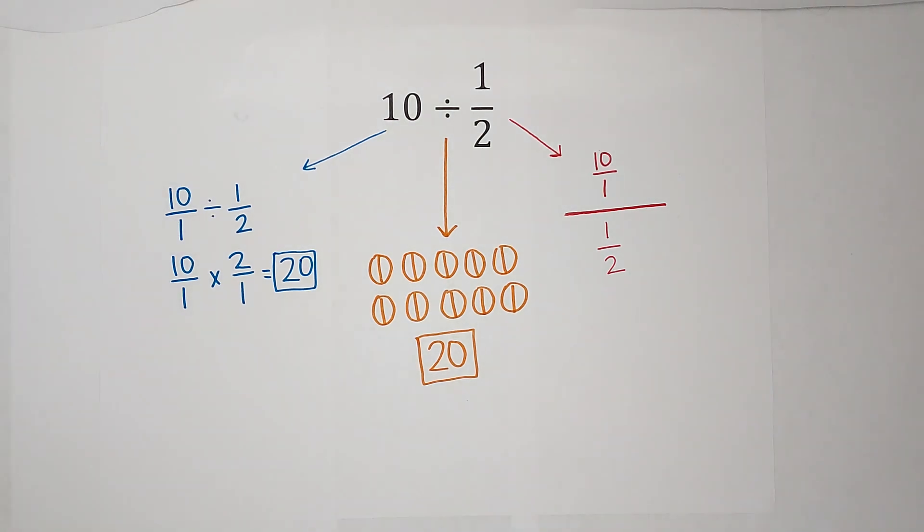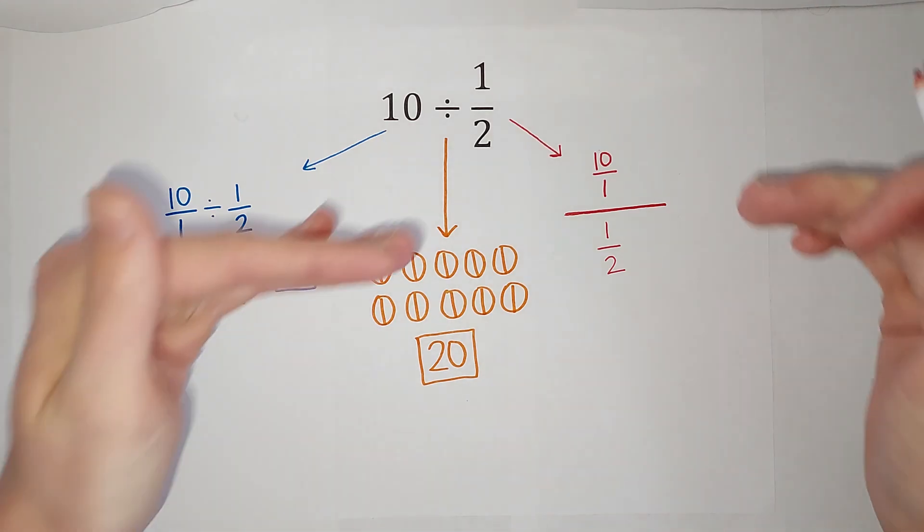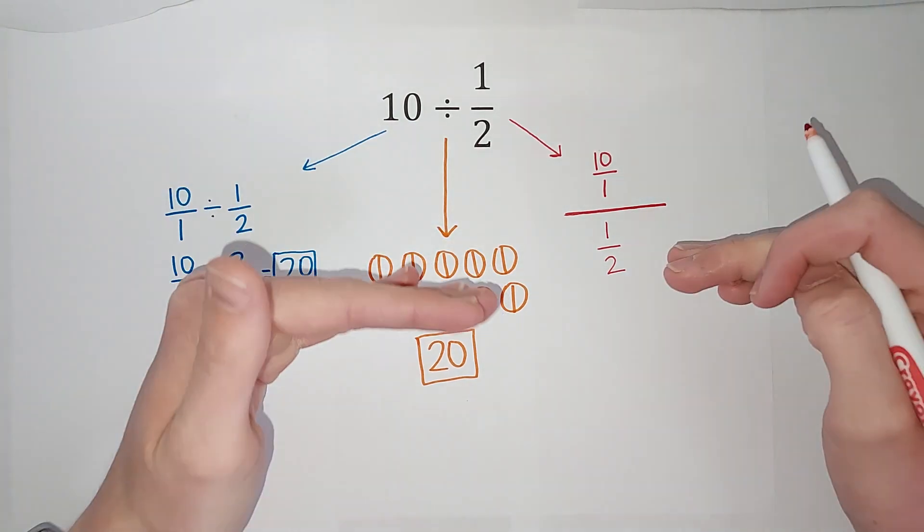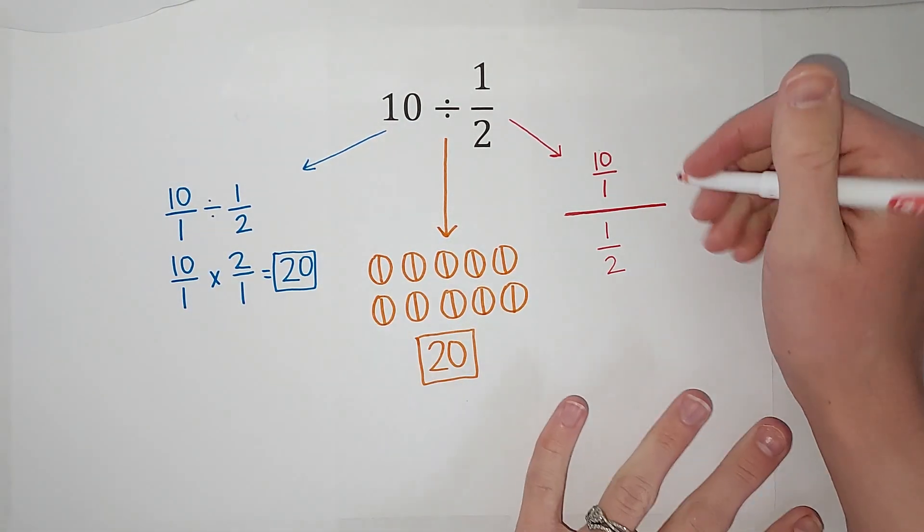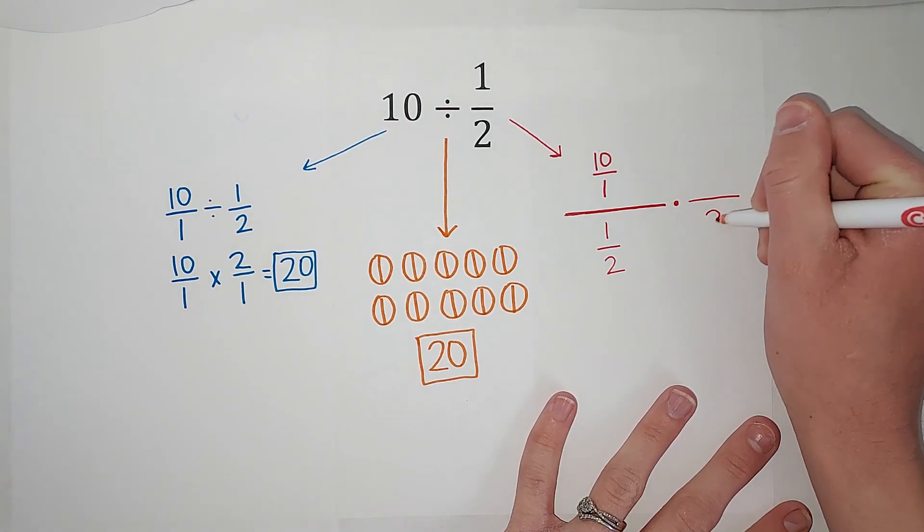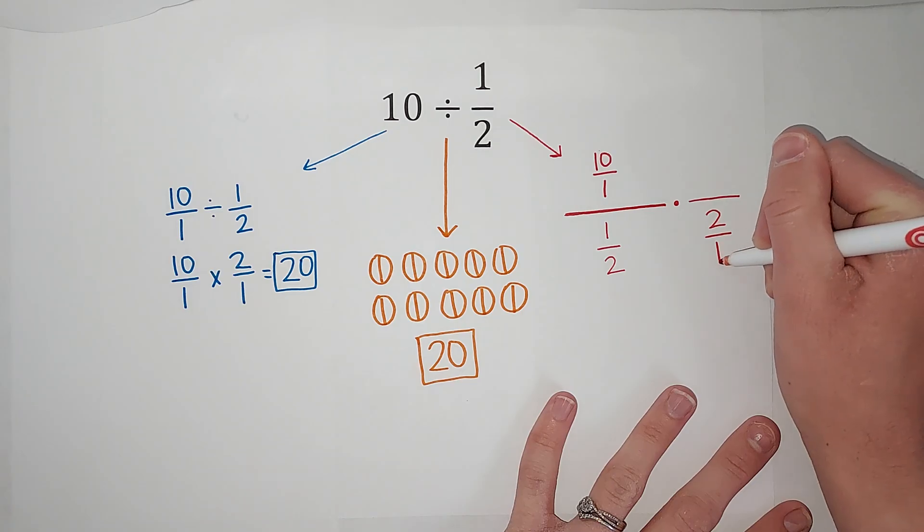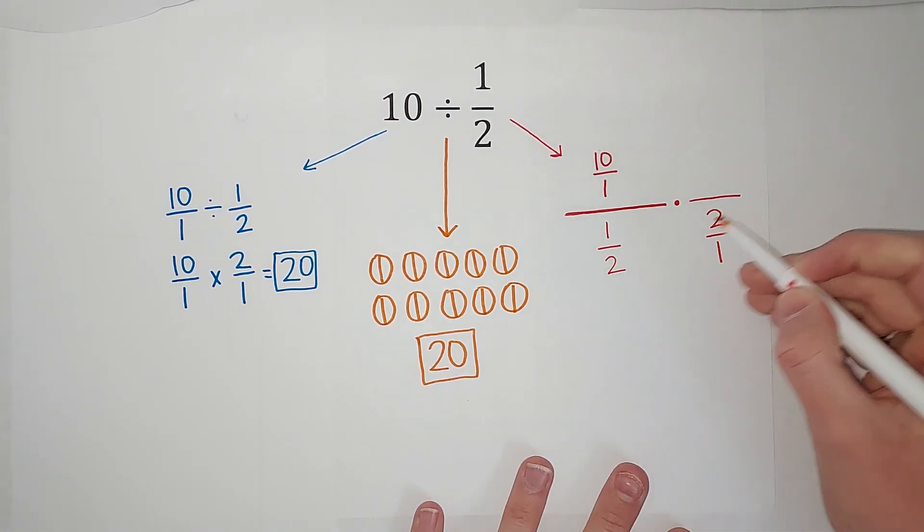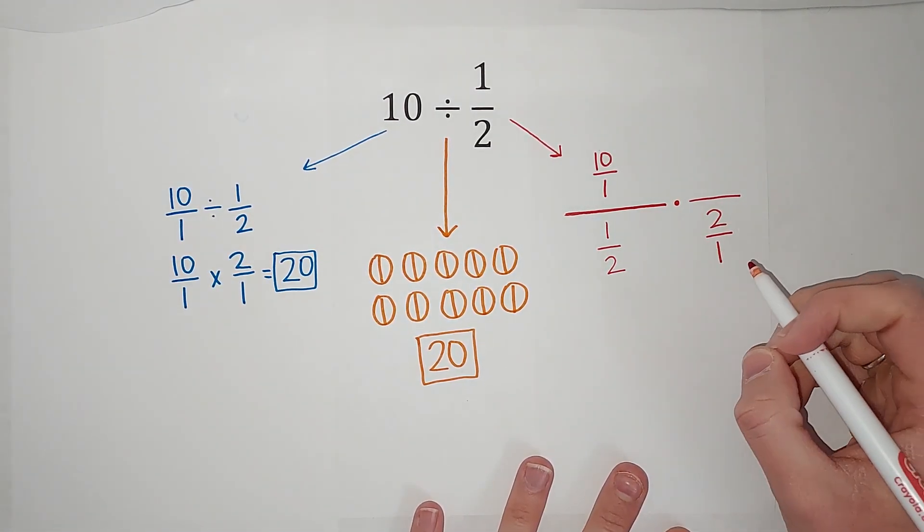But whenever we are changing what a fraction looks like, we don't want to change its value. So we multiply the same on the top and the bottom. So I'm going to multiply the bottom by 2 over 1. Because when I multiply that, those are going to cancel and just leave me with a 1 on the bottom.